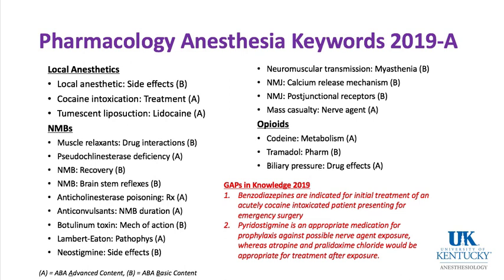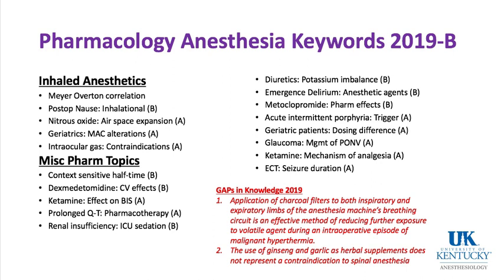In inhaled anesthetics from 2019, topics include: tramadol pharmacology, biliary pressure effects, Meyer-Overton correlation, postoperative nausea and inhalational anesthetics, nitrous oxide and airspace expansion, what happens to MAC in the elderly, and sulfur hexafluoride gas and contraindication to nitrous oxide. For IV anesthetics, keywords include dexmedetomidine and ketamine.